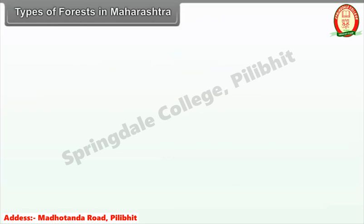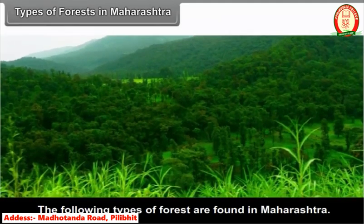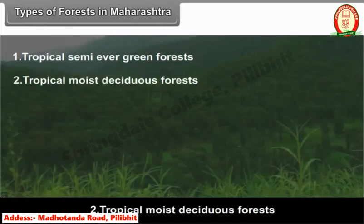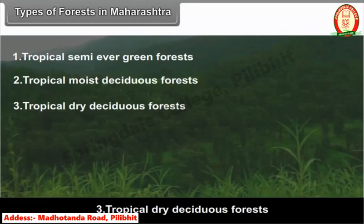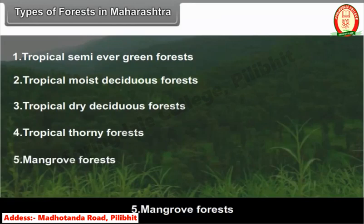The following types of forests are found in Maharashtra: (1) Tropical semi-evergreen forests, (2) Tropical moist deciduous forests, (3) Tropical dry deciduous forests, (4) Tropical thorny forests.